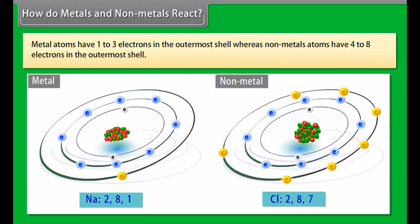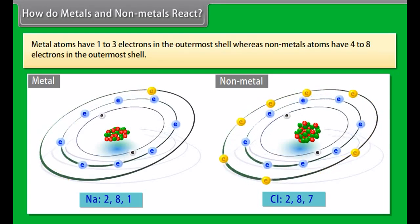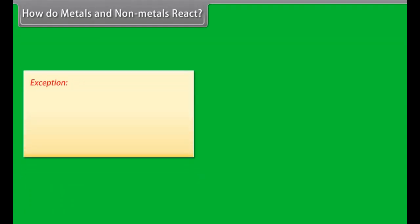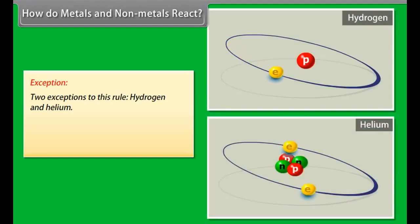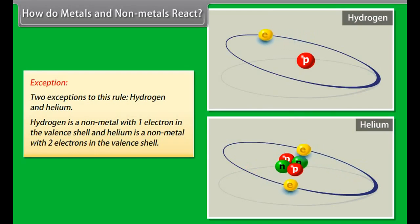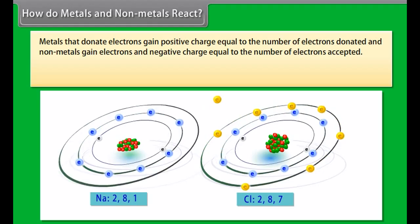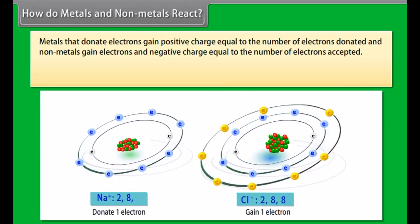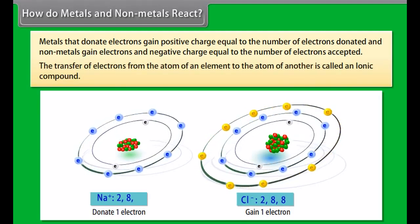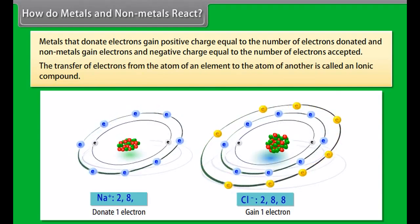How do metals and non-metals react? Metal atoms have 1 to 3 electrons in the outermost shell, whereas non-metal atoms have 4 to 8 electrons in the outermost shell. Exception: two exceptions to this rule, hydrogen and helium. Metals that donate electrons gain positive charge equal to the number of electrons donated, and non-metals gain electrons and negative charge equal to the number of electrons accepted. When a metal atom donates 1, 2 or 3 electrons from its valence shell to another non-metal atom that has the ability to accept these electrons, it is known as electrovalency. As a result of this, both these atoms form the structure of an inert gas. The transfer of electrons from the atom of an element to the atom of another is called an ionic compound.